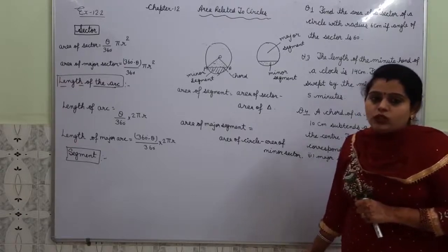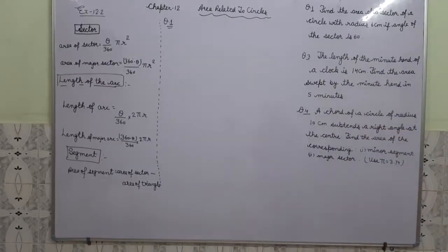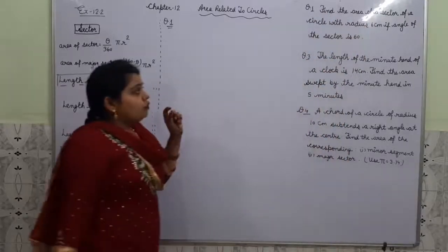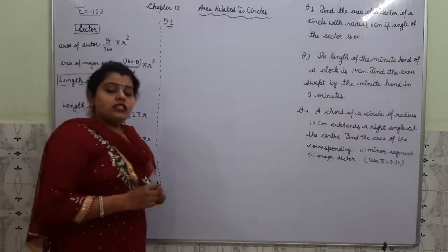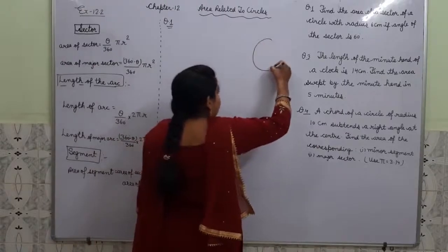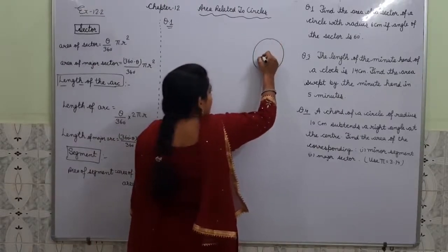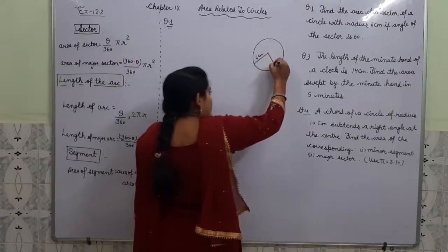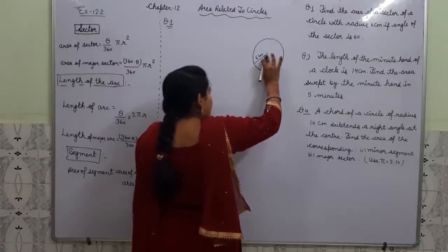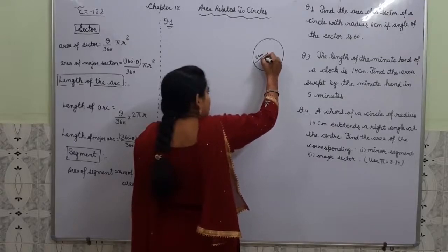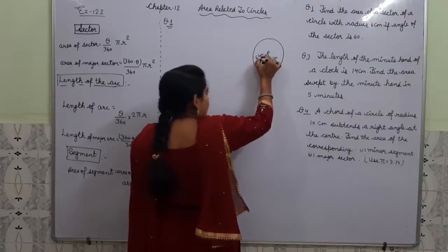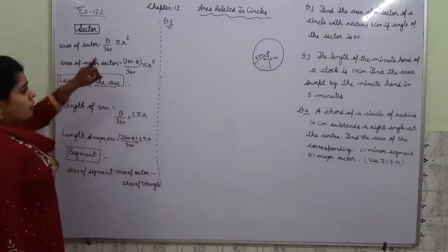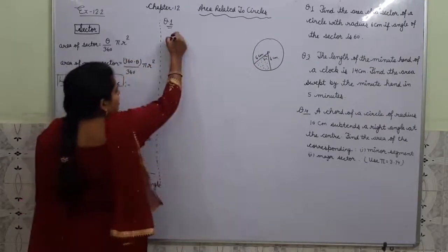Now we will start our exercise 12.2. Question number one: find the area of the sector of a circle with radius 6 centimetres, if the angle of the sector is 60 degrees. First of all, we draw a diagram — a circle of radius 6 cm with a sector of angle 60 degrees. Radius is 6 cm, angle is 60 degrees. We have to find the area of the sector.